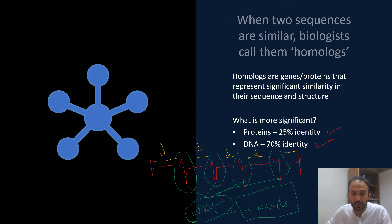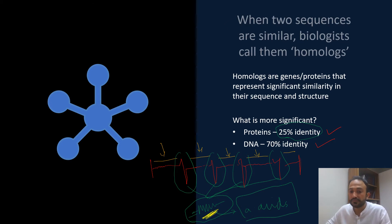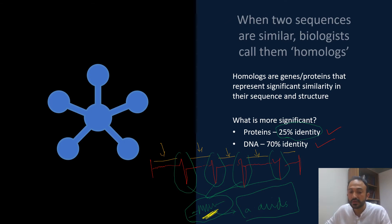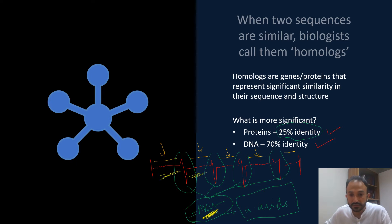When there is 25% identity between two protein sequences, we are saying there is 25% similarity in the coding region, which is very important. So even a low identity of 25% at the protein level is considered significant. However, at the DNA level, if there is only 25% identity, that is not very significant, because the majority of that identity likely falls within intronic regions, which are not functionally significant and can be random.